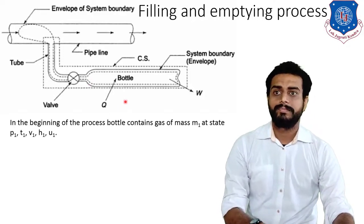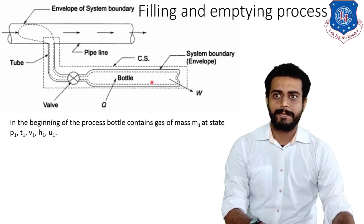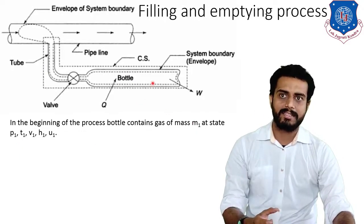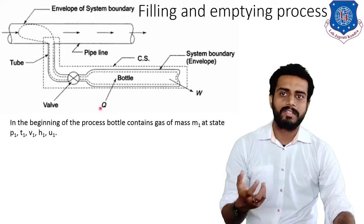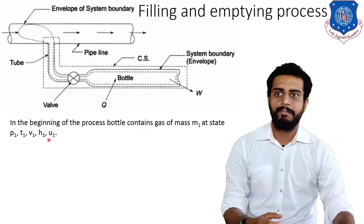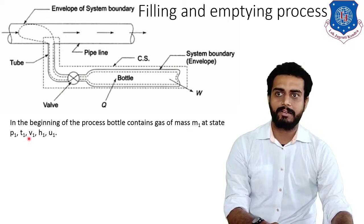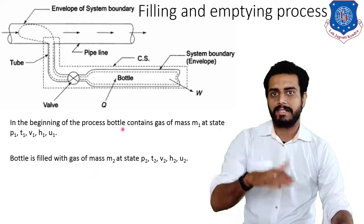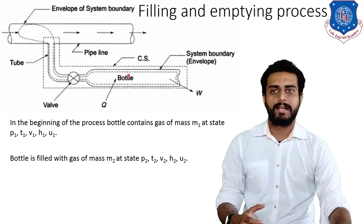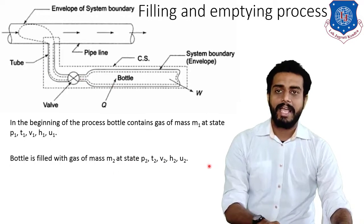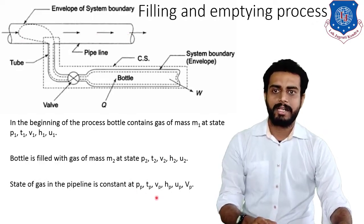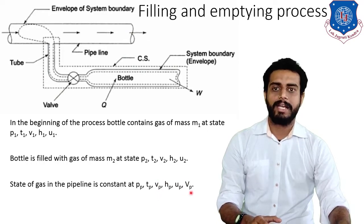Initially, we will consider that this bottle is filled with some amount of gas, and we want to completely fill the bottle. The properties of the gas already present are given the subscript 1: mass M1, pressure P1, temperature T1, specific volume V1, internal energy U1, and enthalpy H1. When the bottle is completely filled, those properties take subscript 2. The pipeline properties are given subscript P: pressure Pp, temperature Tp, specific volume Vp, enthalpy Hp, internal energy Up, and velocity Vp.